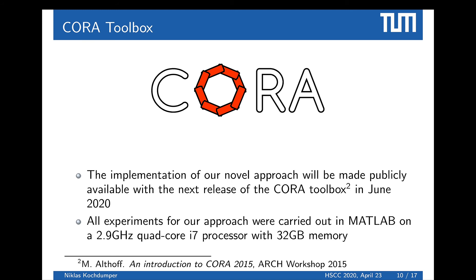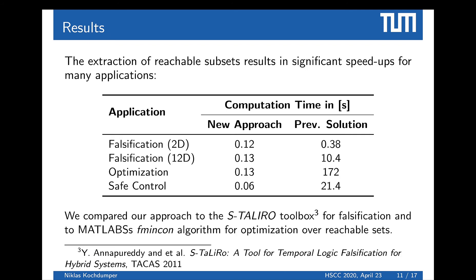We demonstrate on three different applications that our approach can lead to significant speedups. These applications are falsification, optimization over reachable sets, and safe control. Comparing our new approach to previous solutions — Staliro toolbox for falsification and MATLAB's fmincon for optimization — our new approach results in significant speedups across all three applications.